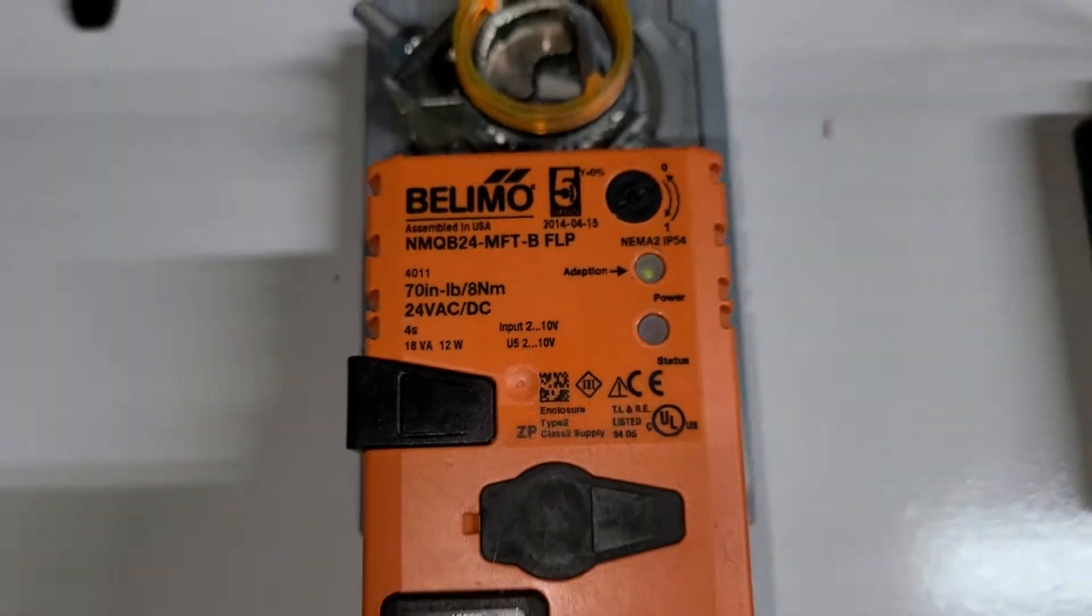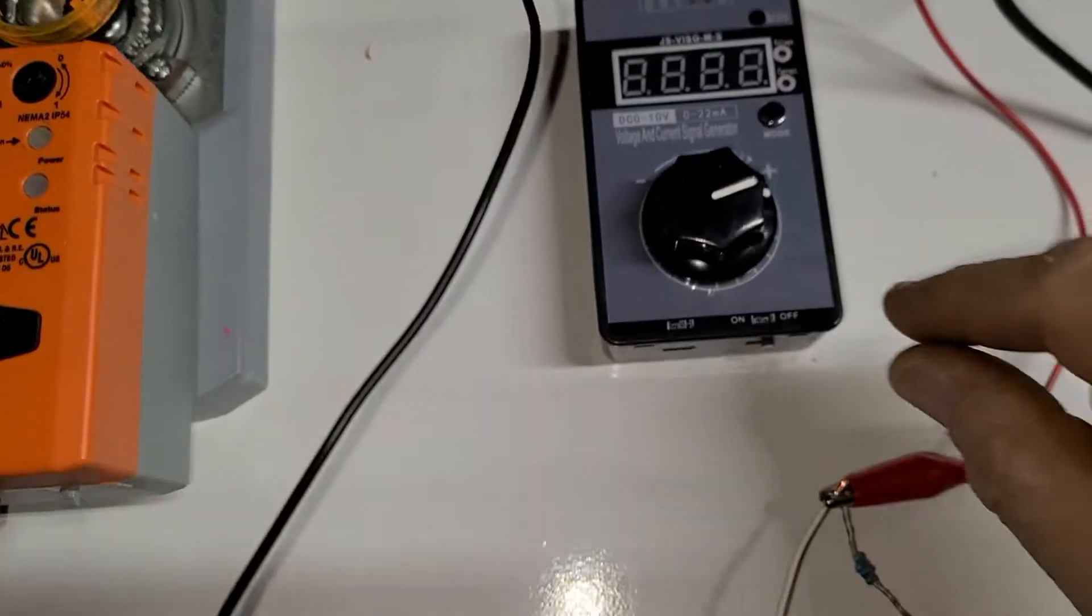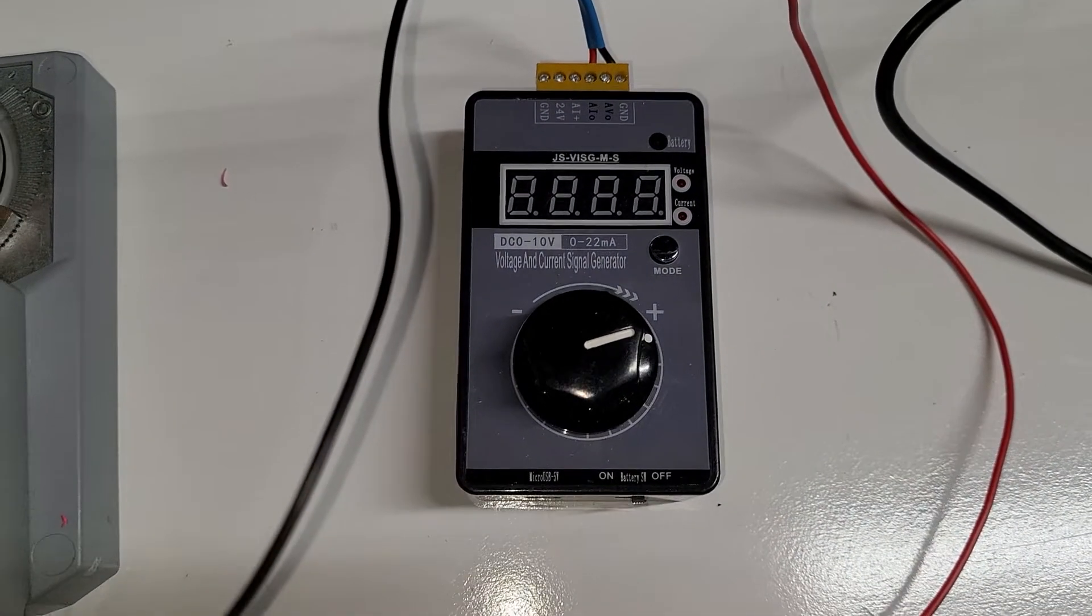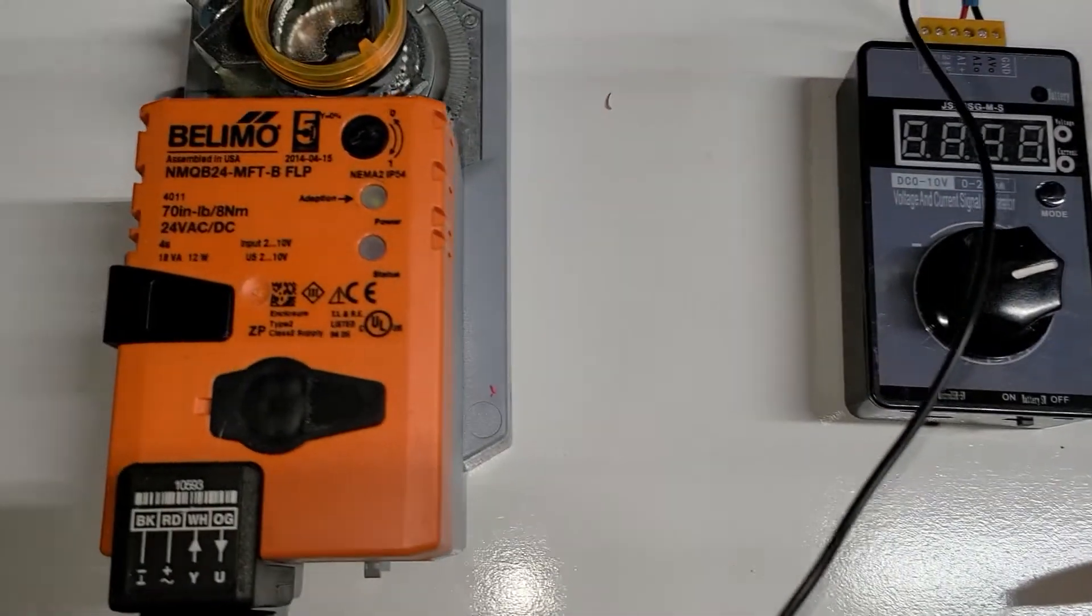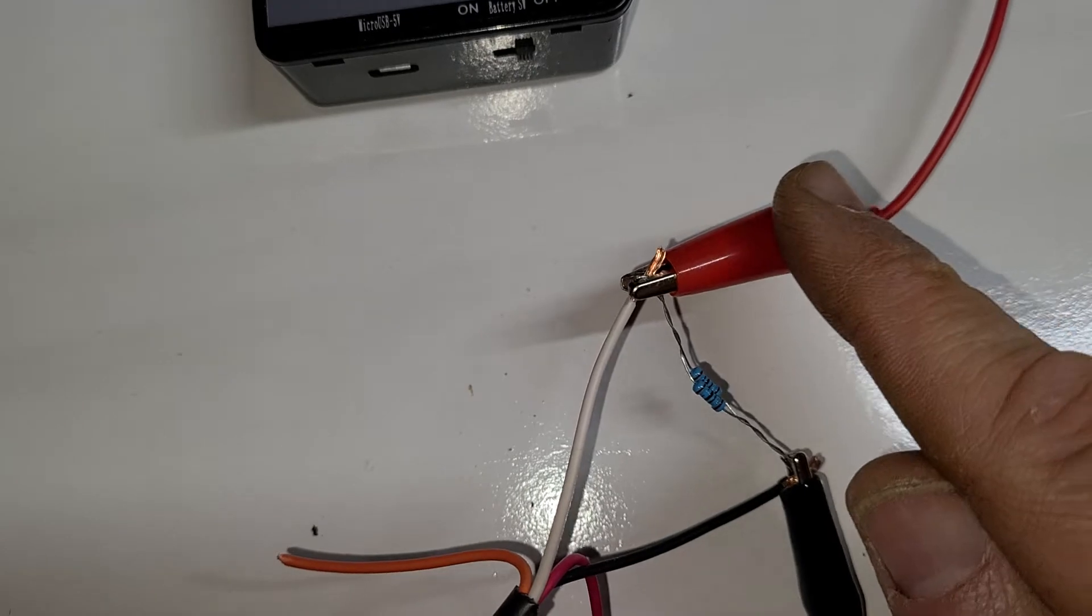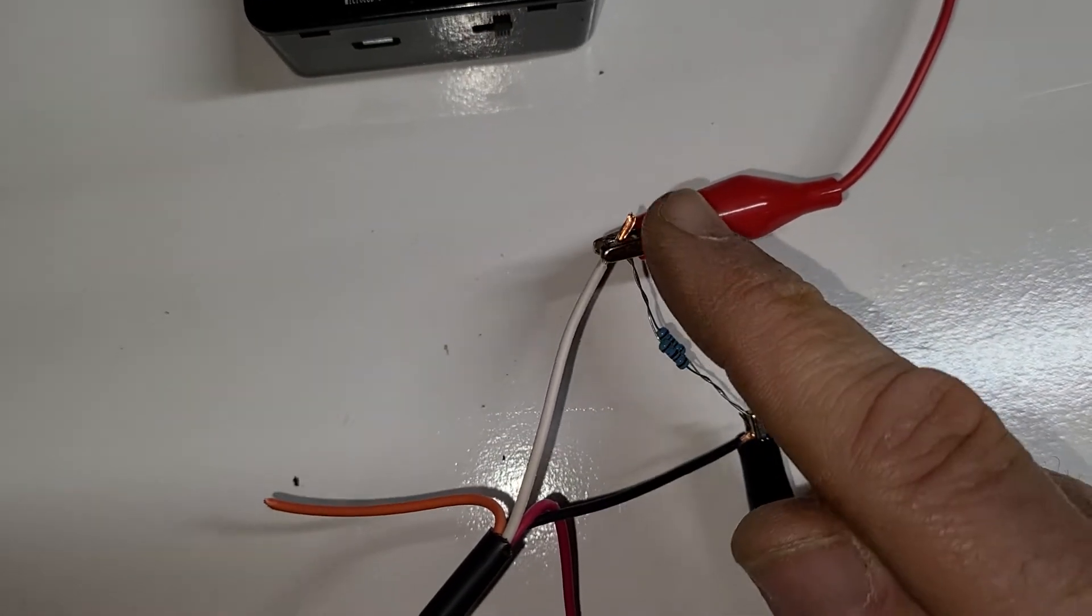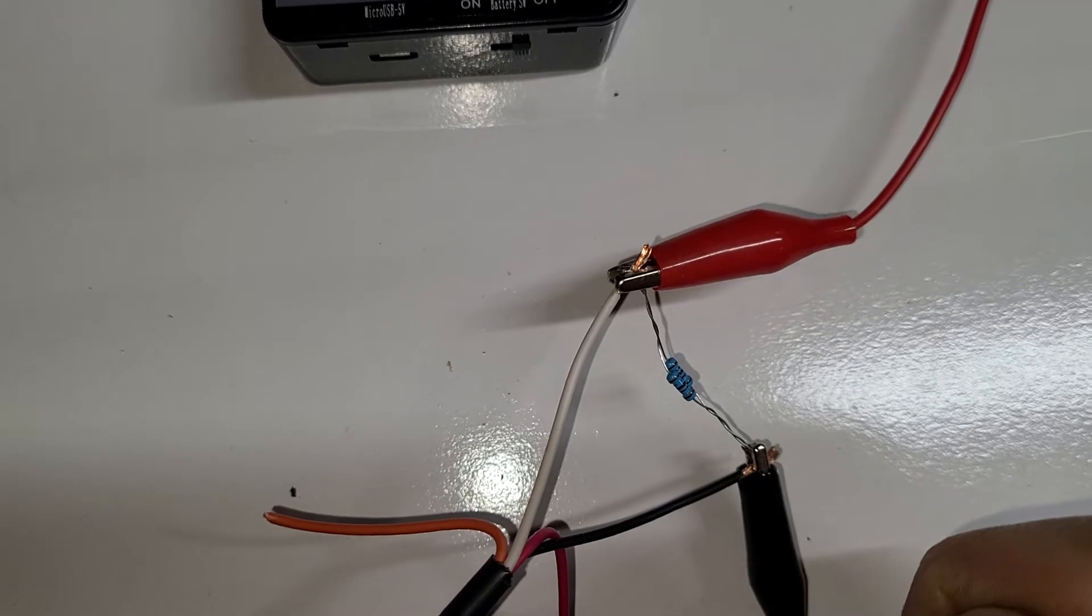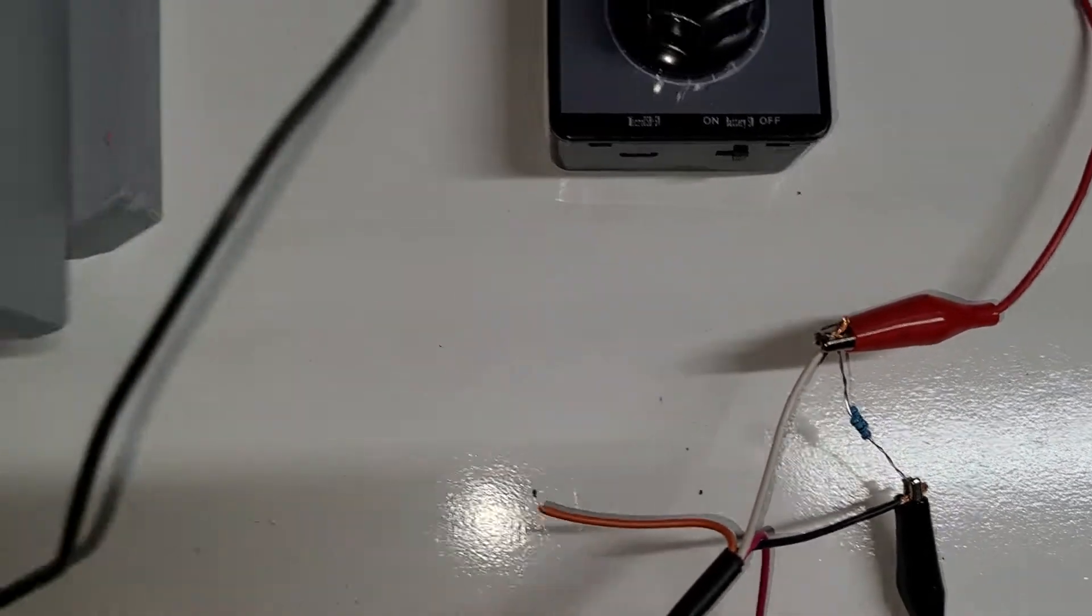2 to 10 volts on the control signal. However, this is a 4 to 20 milliamp simulator. 4 to 20 milliamps is a standard industrial control signal. In order to get 2 to 10 volts, we take a 500 ohm resistor. The current flows through the resistor and back to the simulator, producing 2 volts at 4 milliamps and 10 volts at 20 milliamps. So it works out just right.